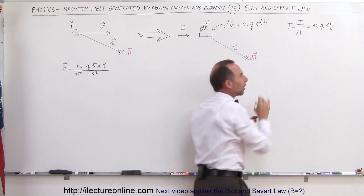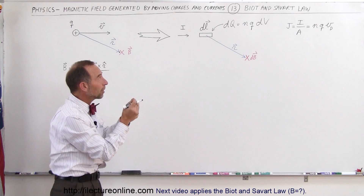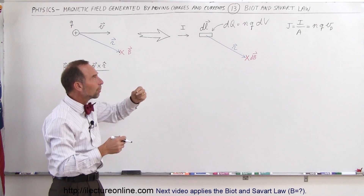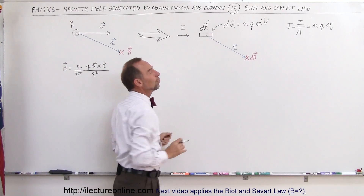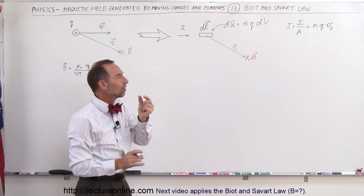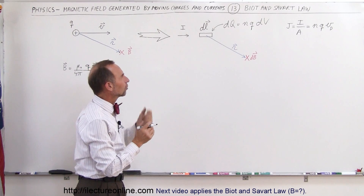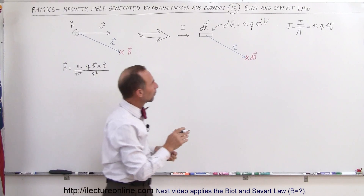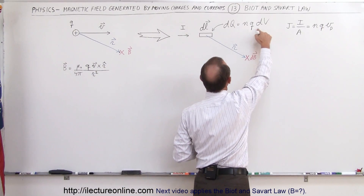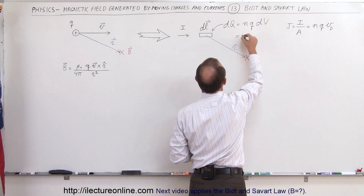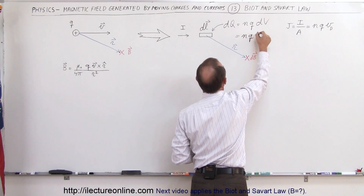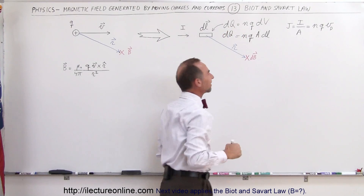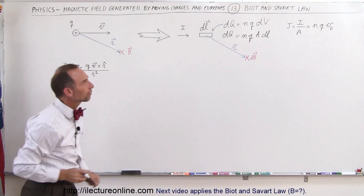The number of particles per unit volume times the volume gives you the number of particles in that region, and multiplying by the charge on each particle gives you the total charge within that infinitesimally small piece of the conductor. DV is simply the cross-sectional area times the length, so DQ can be written as N times Q times the cross-sectional area times DL — that is the amount of charge inside that small little length of conductor.